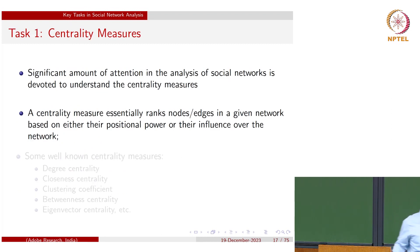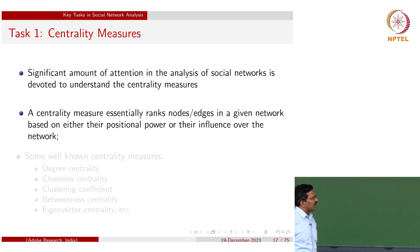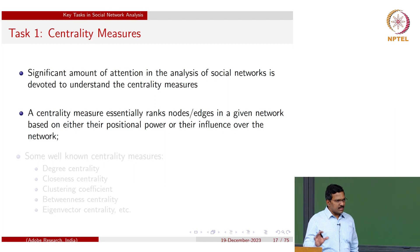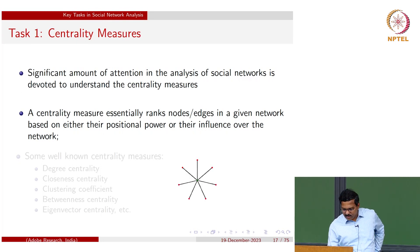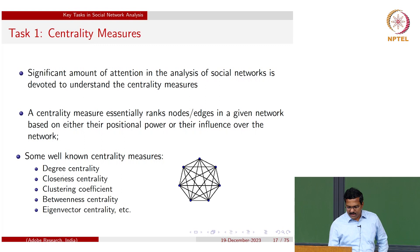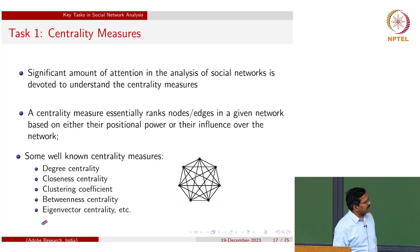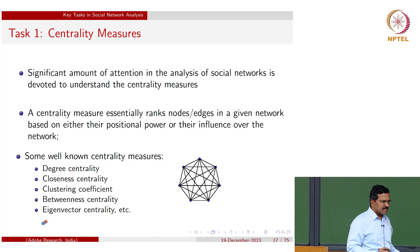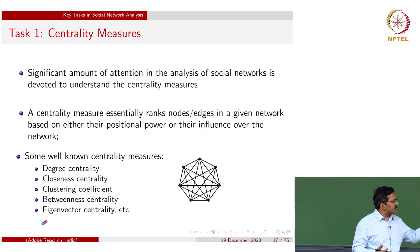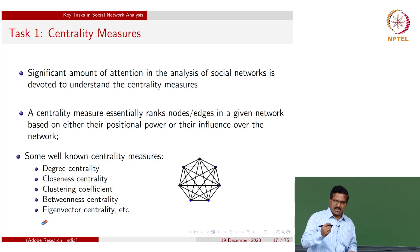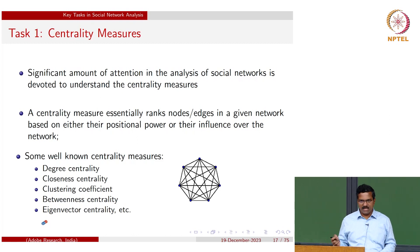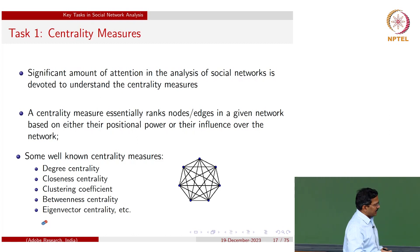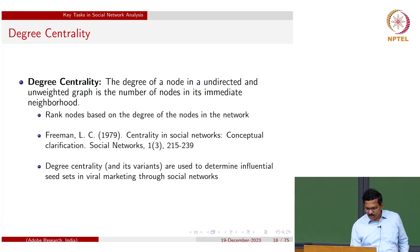There are some popular centrality measures: degree centrality, closeness centrality, clustering coefficient, betweenness centrality, and eigenvector centrality. These are classical centrality measures or ranking mechanisms. The purpose of these centrality measures is that they essentially attach a score or number to every node or edge in the given network.